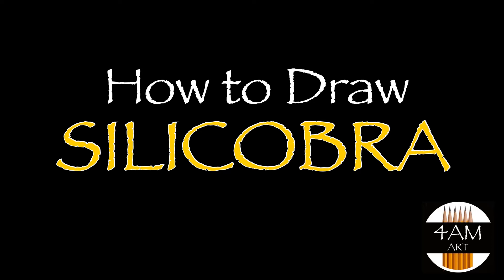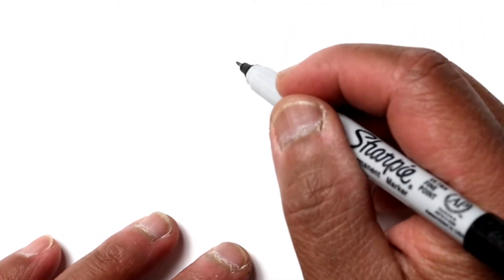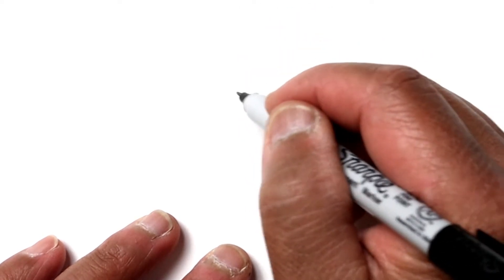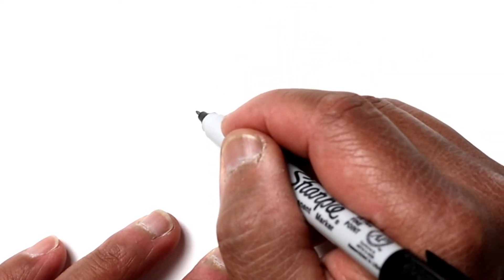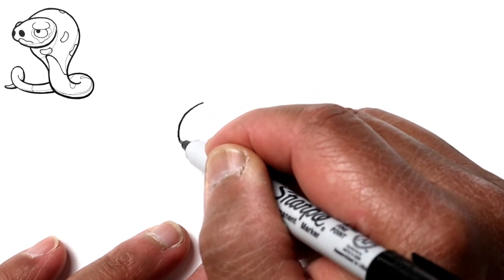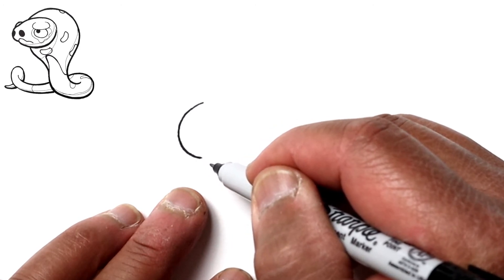Hello everyone, Justin here, and today I'm going to show you how to draw Silicobra, a sand snake Pokémon. Let's start by drawing its head, which is just kind of an oval. We'll start with the nose area by drawing a half circle, then we're gonna go down a little bit here because of the mouth.